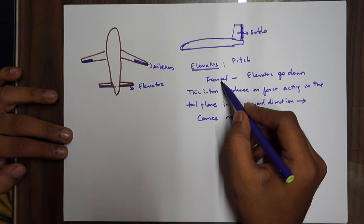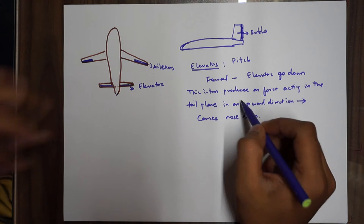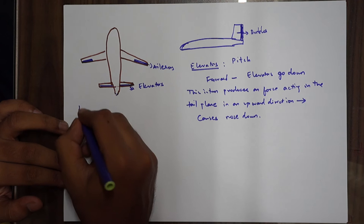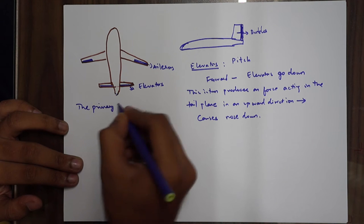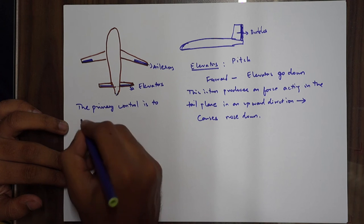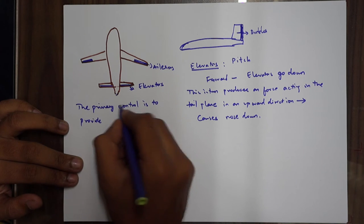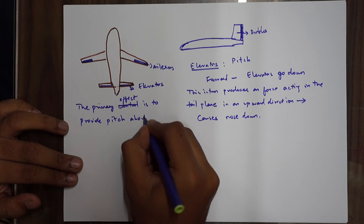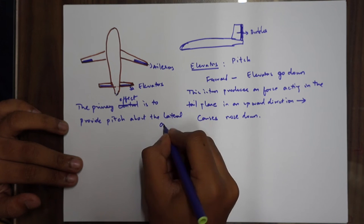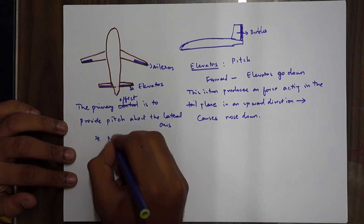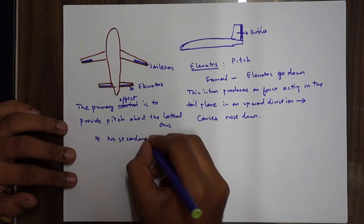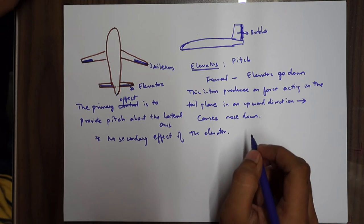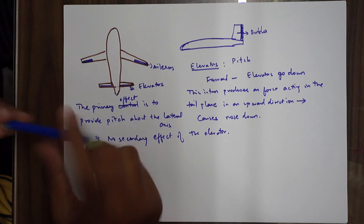The opposite applies when you pull the column backward — elevators come up, producing a force acting on the tail plane in the downward direction, causing a pitch up. The primary effect of elevators is to provide pitch about the lateral axis. Important point: there is no secondary effect of the elevator.